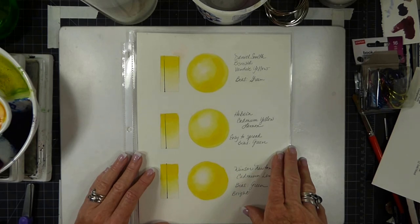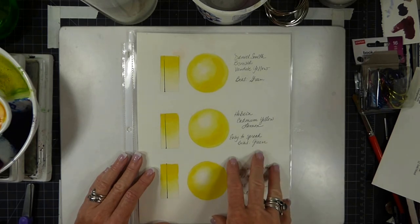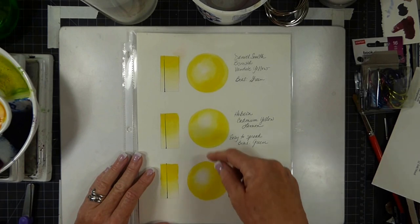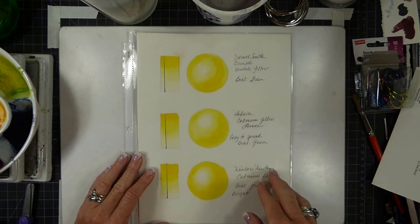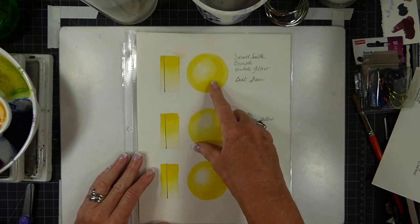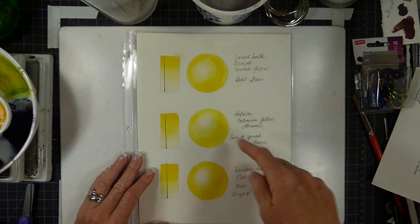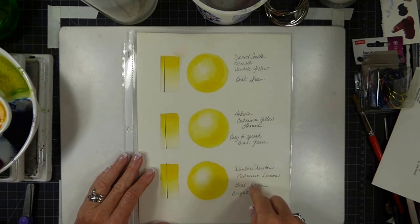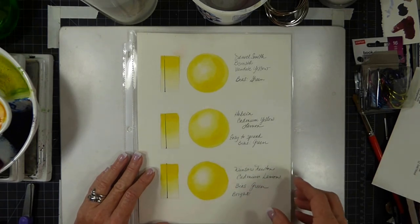It's nice to have a record of the different colors because you can compare them. If for some reason Daniel Smith stopped manufacturing this particular paint, you could look on any of the charts and find a substitute for it.